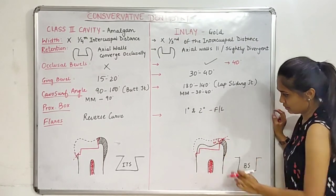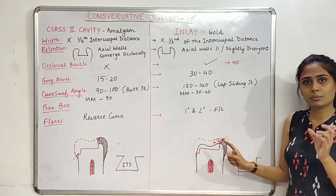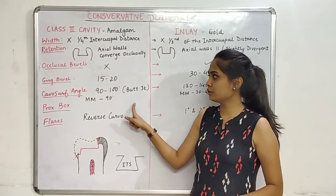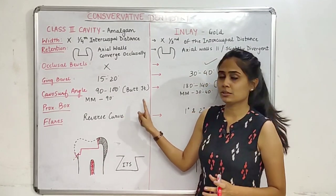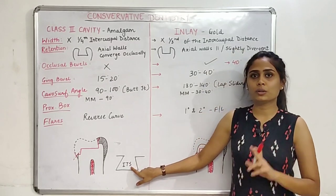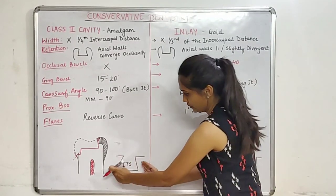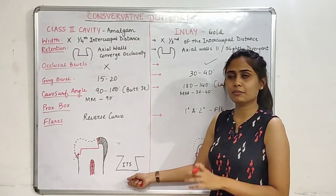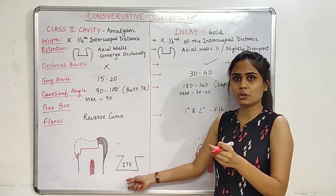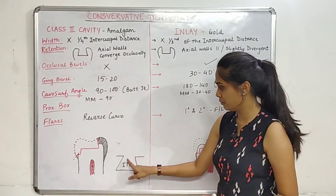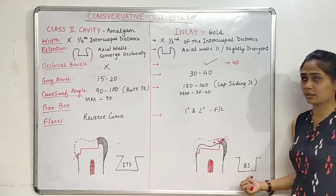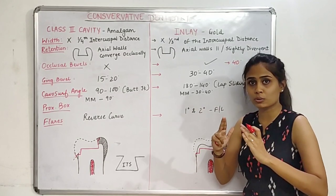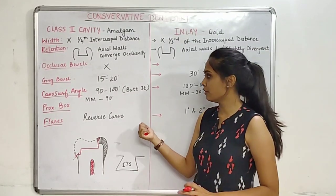For the proximal box shape: in the Class 2 cavity for amalgam, the proximal box has an inverted trunk shape due to the occlusally converging walls. If you view from the mesial or distal side of an MO preparation, you'll see this inverted trunk shape. In the inlay cavity, the proximal box has a box shape — it is parallel since the walls are parallel to each other.